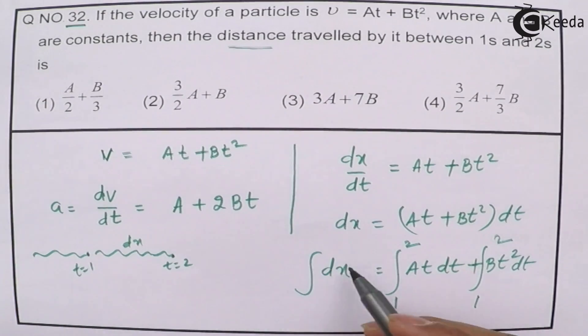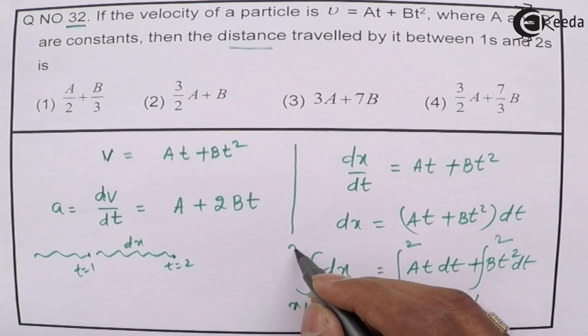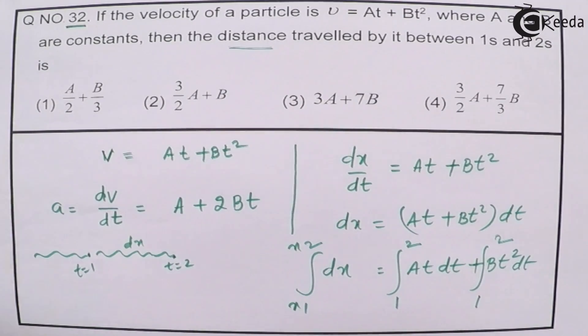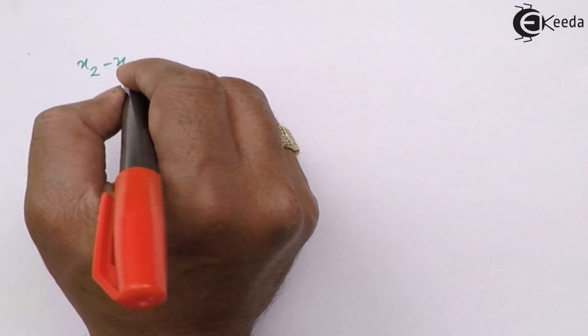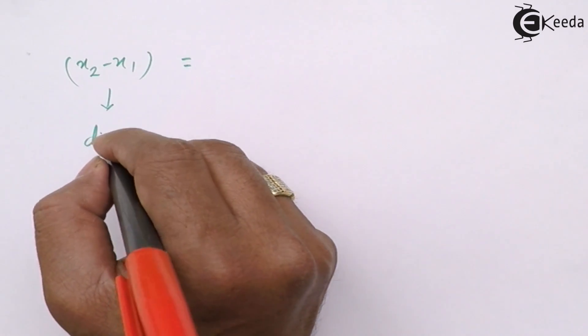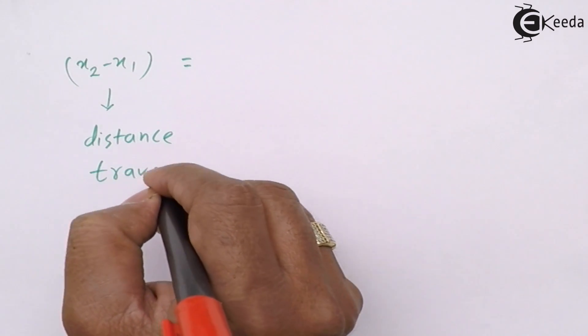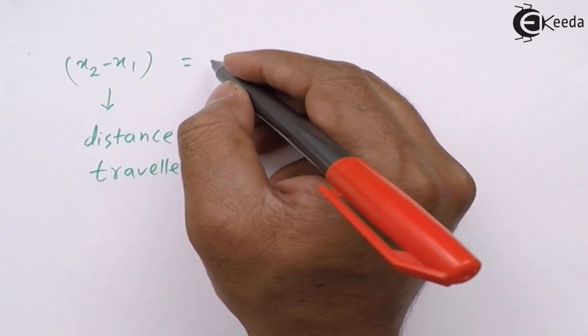This distance traveled, suppose its position is x1, this position is x2, so it is x1 to x2. Now, x2 minus x1 is the distance traveled, and that equals to, you can see here...